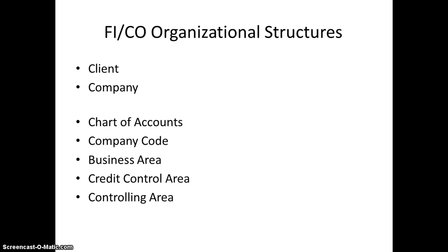FICO organizational structure — this is a basic organizational structure. Normally we have to configure all these things initially. When a company purchases SAP ECC ERP software, these are the basic things that we have to maintain first. FI configuration is the heart of the entire company — only after the FI configuration is done can we go ahead and do the configurations for any other department like MM, SD, or HR. First we have to do the configuration of FI.